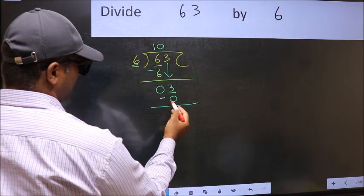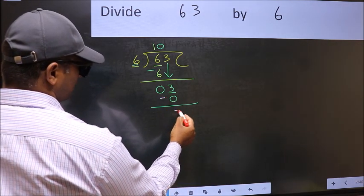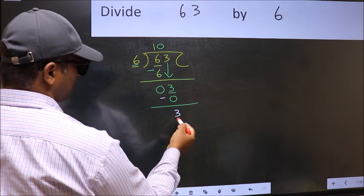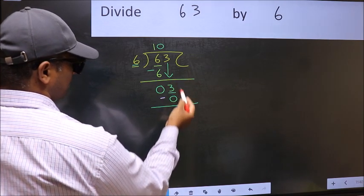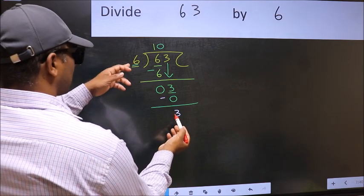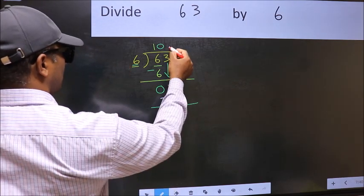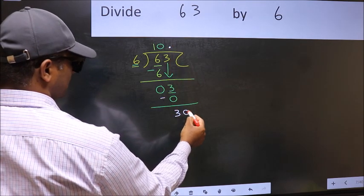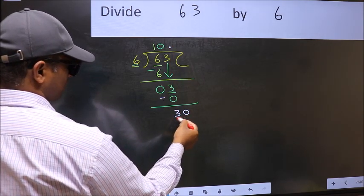Now you should subtract. 3 minus 0, 3. Over here, we did not bring any number down. And 3 is smaller than 6. So now you can put dot and take 0. So 30.